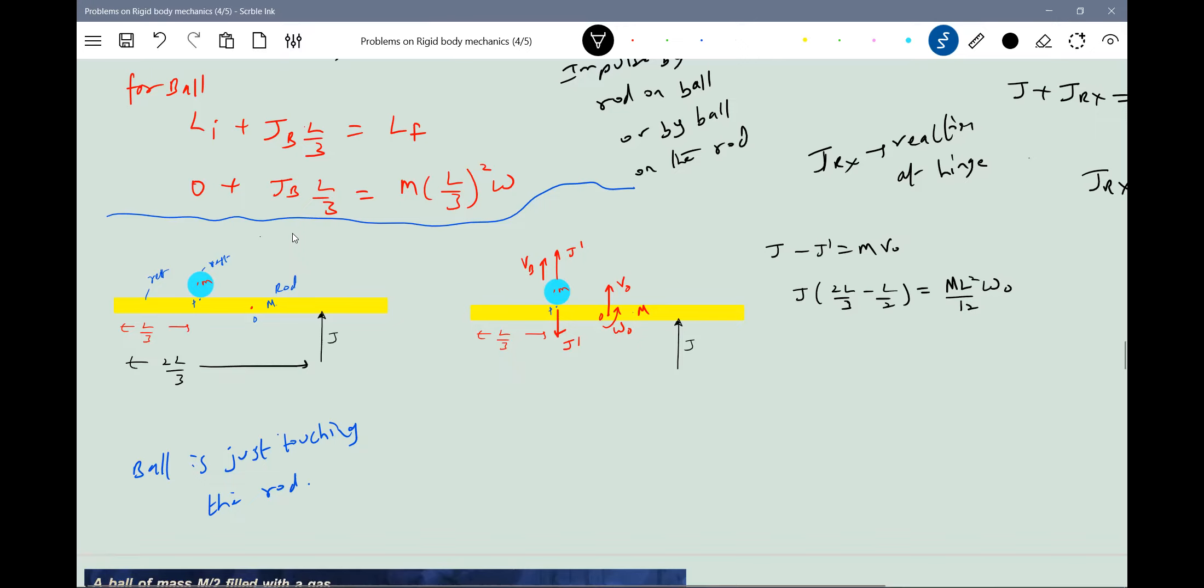Now, will there be any angular impulse by that? That also has to be included. That I forgot. I'll include that also. Plus, this will be angular impulse by J dash, J dash times L by 2 minus L by 3. Equal to M L square by 12 into Omega not. How many unknowns are there? V not, J dash and Omega not. Three unknowns are there.